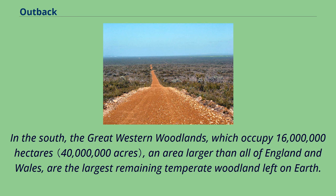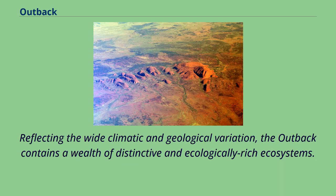In the south, the great western woodlands, which occupy 16 million hectares — an area larger than all of England and Wales — are the largest remaining temperate woodland left on Earth. Reflecting the wide climatic and geological variation, the outback contains a wealth of distinctive and ecologically rich ecosystems.